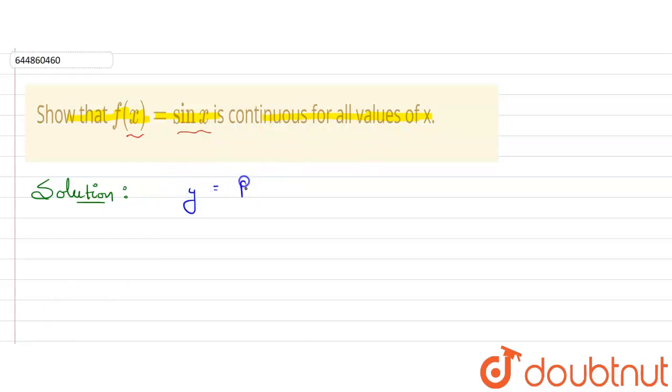Suppose we are having a function y = f(x), and here domain is given, suppose x belongs to set of real numbers. For example, if I draw a graph for this function, suppose this is x axis, this is y axis, and graph comes out to be like this. You can take any line, I'm just giving you an example.